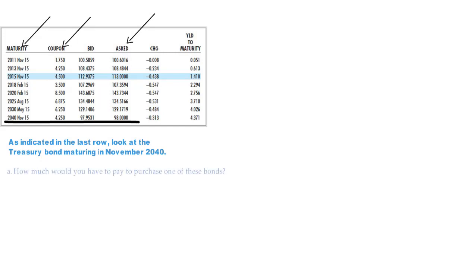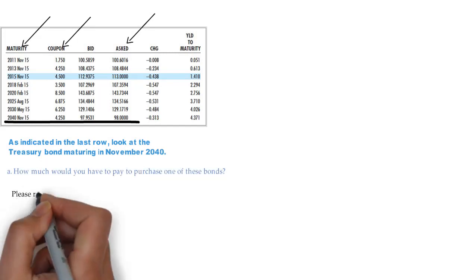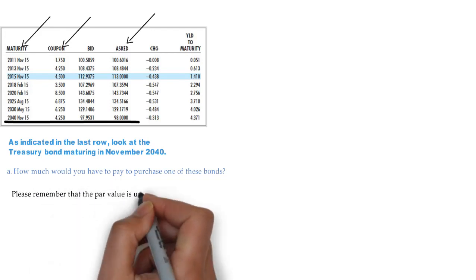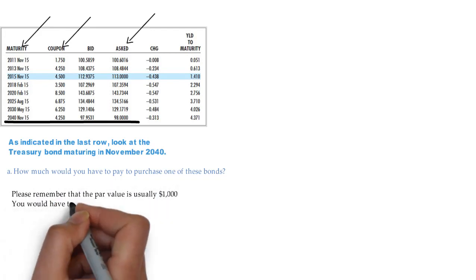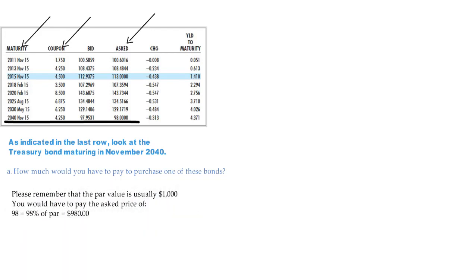The question is, how much would you have to pay to purchase one of these bonds? Please remember that the par value is usually $1,000. So, you would have to pay the asked price of 98, which is 98% of par. That gives you $980.